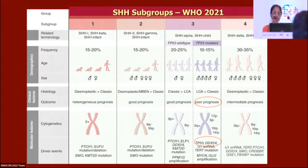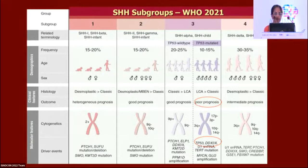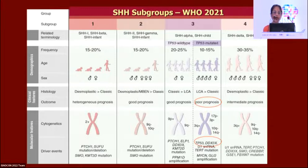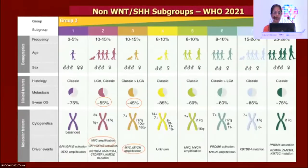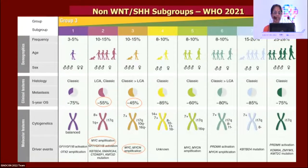WHO 2021 has introduced subgroups which have clinical, pathological, and demographic differences with prognostic implications. In the SHH subgroup, p53-mutant subtype 3 has the poorest prognosis. Non-WNT non-SHH has eight subgroups in Groups 3 and 4 — the worst prognosis is in subgroups 2 and 3, which carry MYC amplification. The corollary of p53 mutation, MYC amplification, and histology is important to recognize.